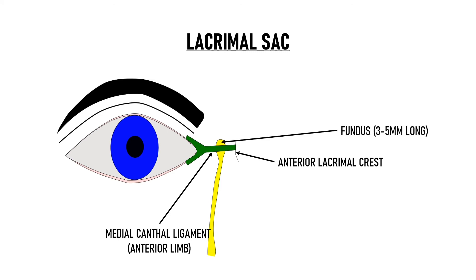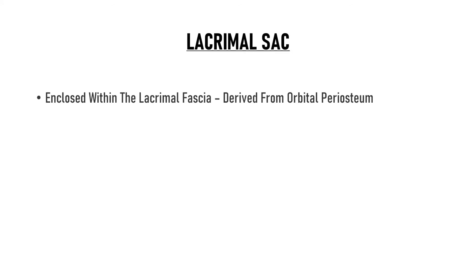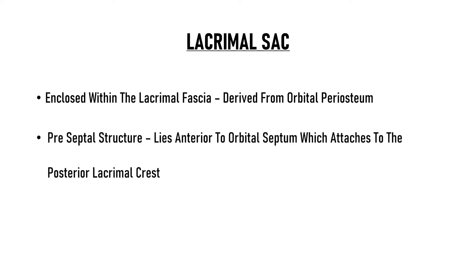The fundus is about 3 to 5 mm long. The rest of the sac below the fundus is known as the body of the sac, which is about 10 mm long. The lacrimal sac is enclosed within the lacrimal fascia, which is derived from the orbital periosteum. The orbital septum attaches at the posterior lacrimal crest, making the sac a preseptal structure because it lies anterior to the orbital septum.